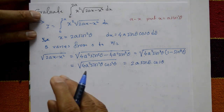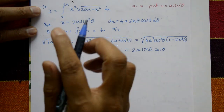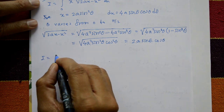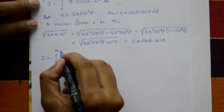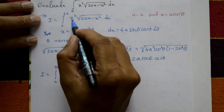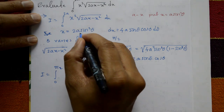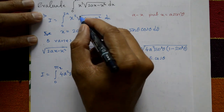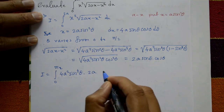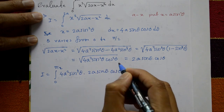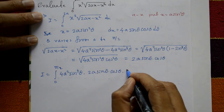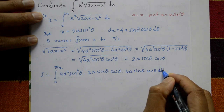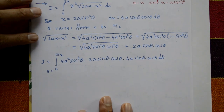Using this result, I is equal to integration of 0 to π/2: x² means 4A² sin⁴θ, into the square root which is 2A sinθ cosθ, and dx is 4A sinθ cosθ, with respect to θ, from θ = 0 to π/2.